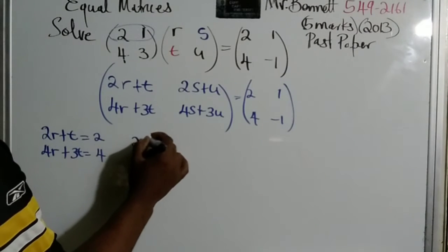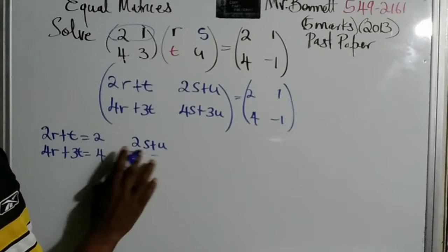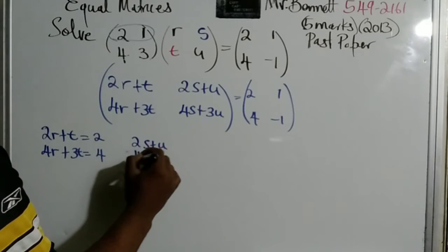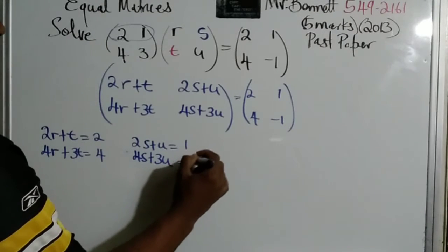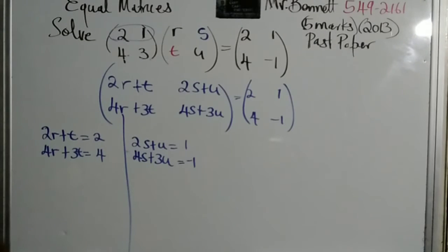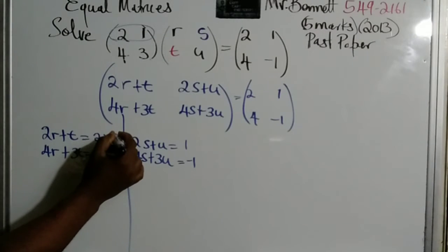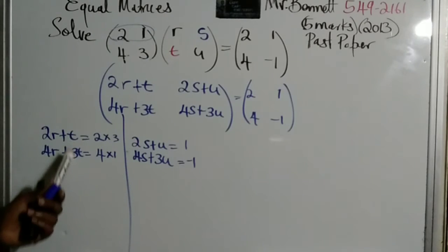All right, here we are now. 2S plus U, and 4S plus 3U. This is equal to 1, and this is equal to negative 1. All we have to do is solve them separately. All right. We can multiply this by, we'll go by 3 and by 1, because the coefficient will be the same.